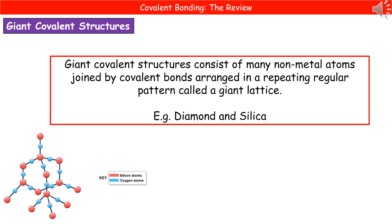Hopefully by the end of this video you know what simple molecules are, what a covalent bond is and where they form. You should be able to draw dot and cross diagrams to represent covalent bonding and recall that these are strong bonds. You should also be able to recall the different types of models used to show structures and their limitations, as well as what a giant covalent structure is.